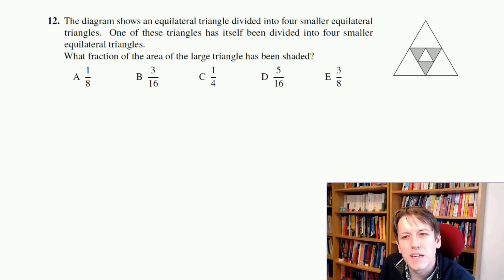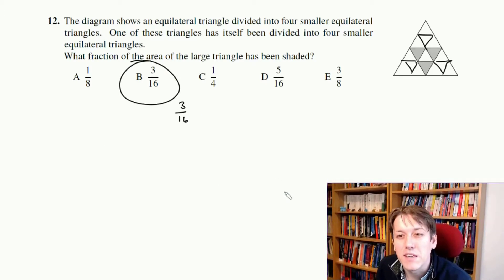If you think about each of these, you can sort of break them down into very small triangles. And each of the middle-sized triangles here has four of the smaller ones, and there's four of them. So there's 16 of these small triangles in total, three of which are shaded. So the answer is that the shaded area is 3 out of 16, and the answer is B, 3 sixteenths.